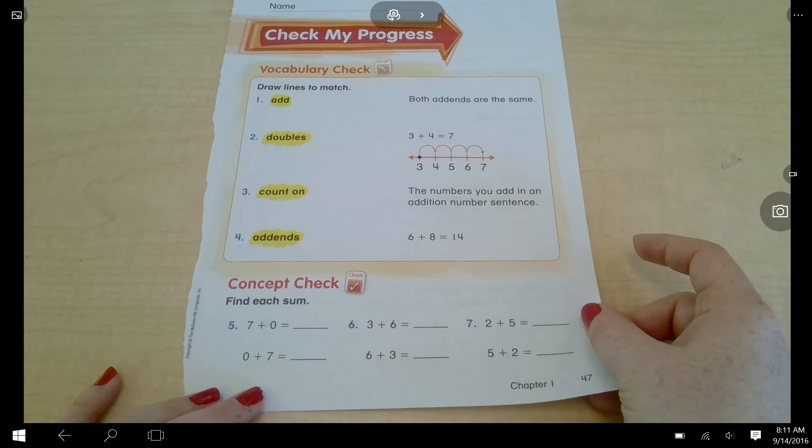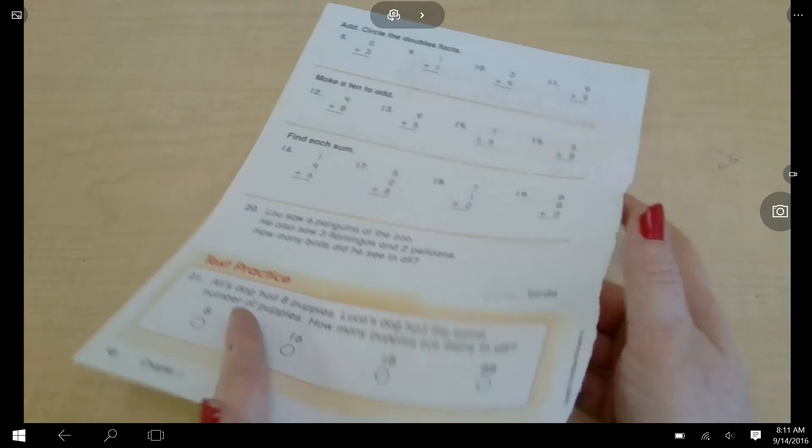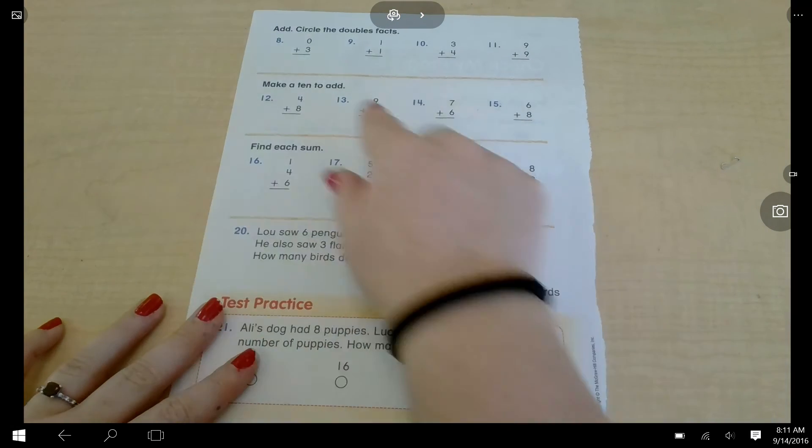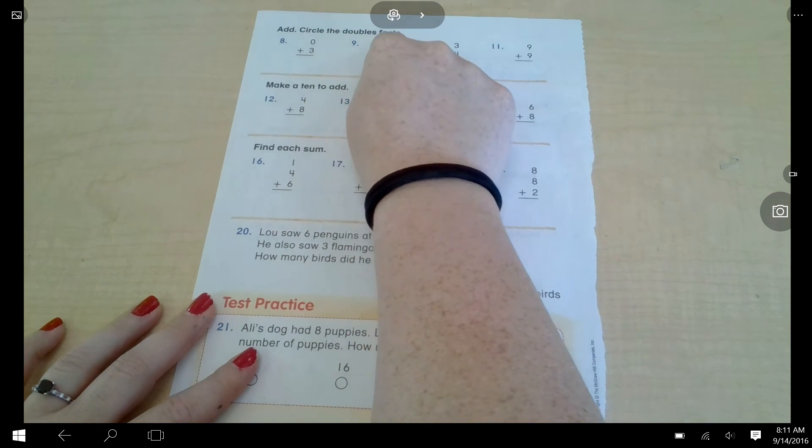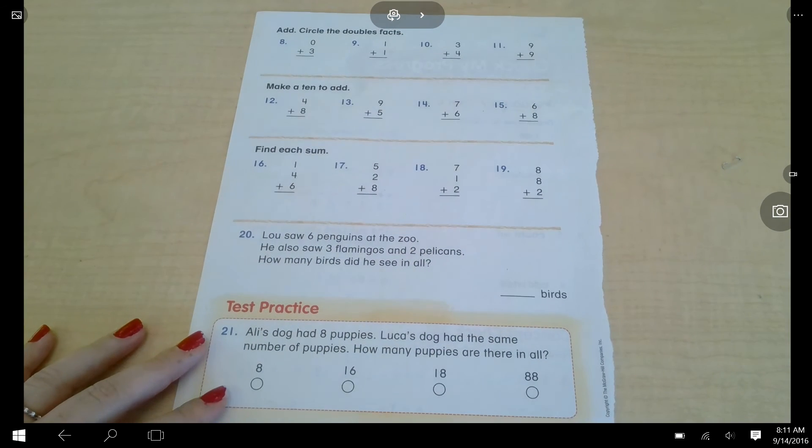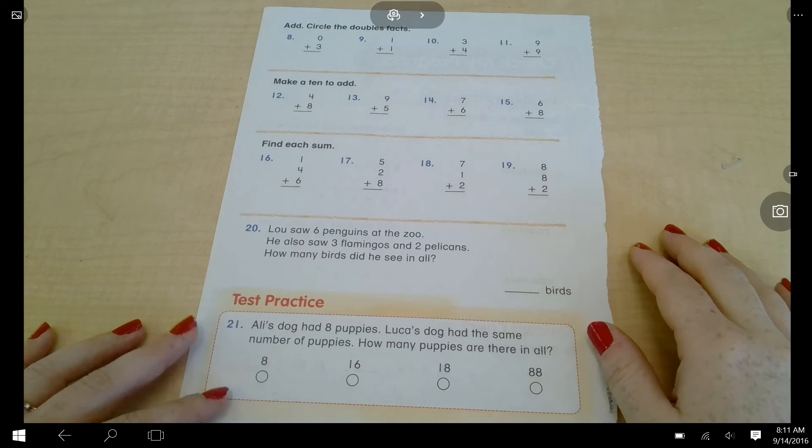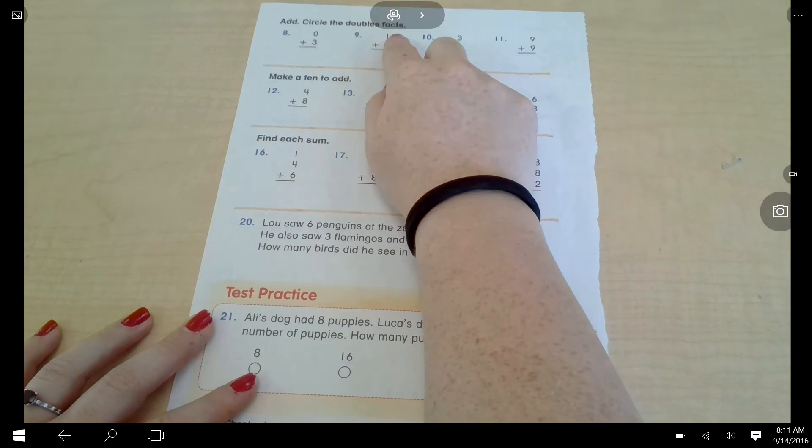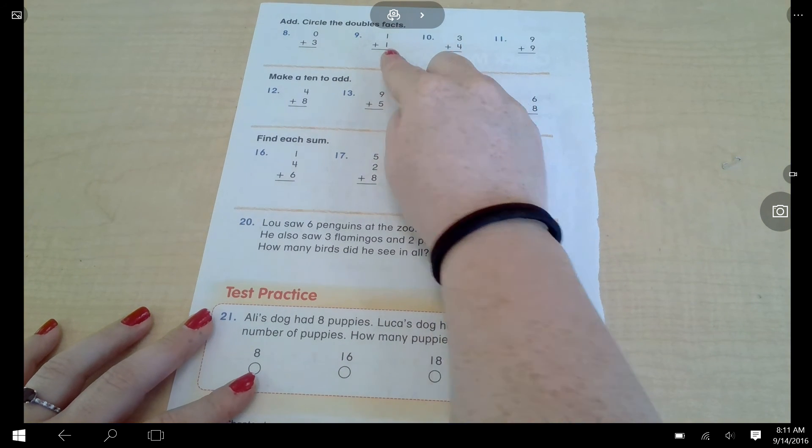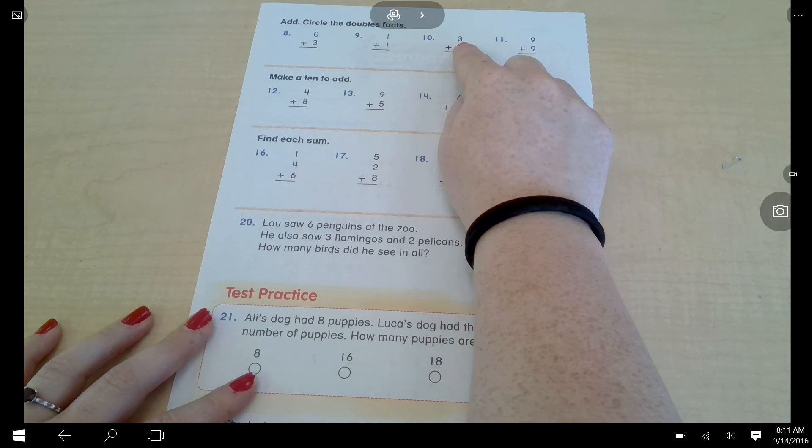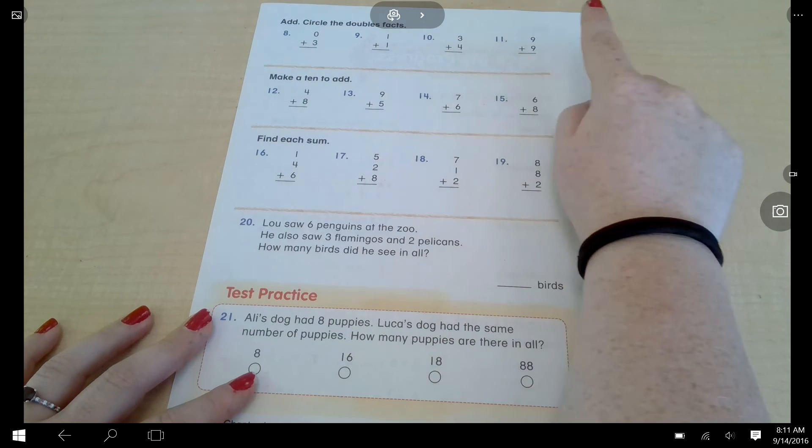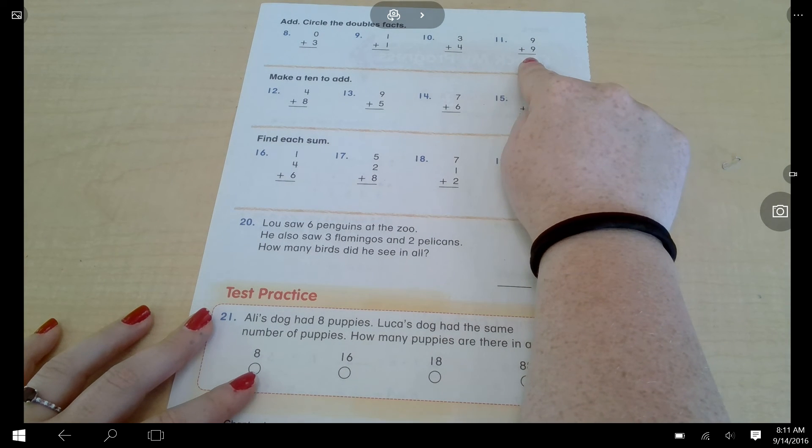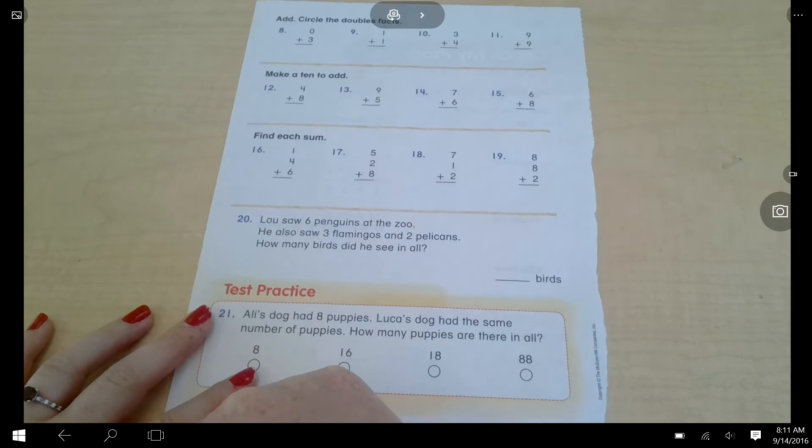You should have completed the whole first side of the page. Let's turn the page over, look at the back side. It says add, circle the doubles facts. Number eight is zero plus three. Number nine is one plus one. Number ten is three plus four. Number eleven is nine plus nine. Pause the video, solve those problems.